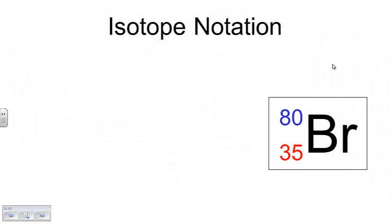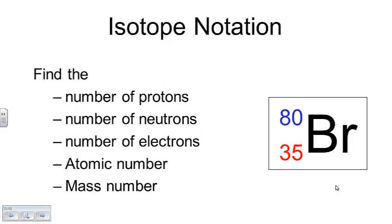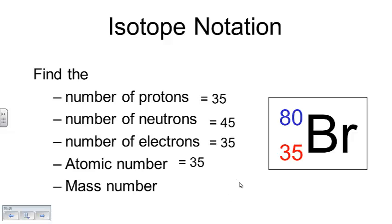Here's an element called bromine. You should be able to figure out that the number of protons is 35. The number of neutrons would be 45 — because 35 plus 45 equals 80. Since we're talking about an atom, not an ion, the number of electrons would be the same as the number of protons. The atomic number is 35 and the mass number is 80.